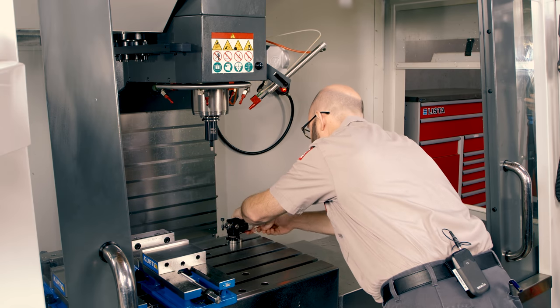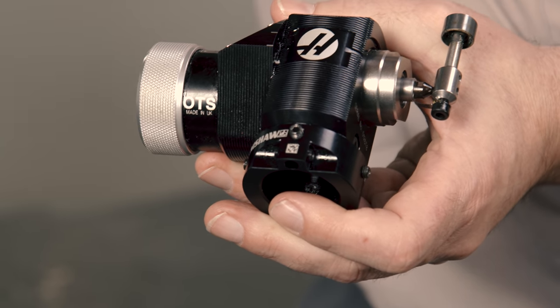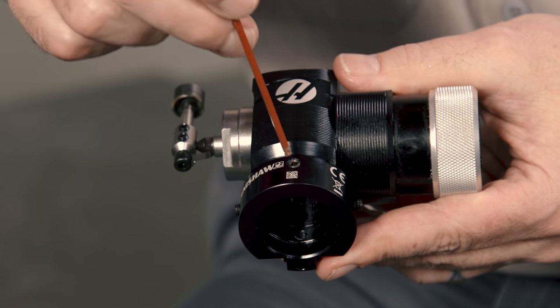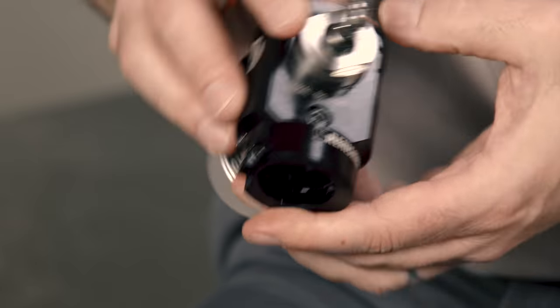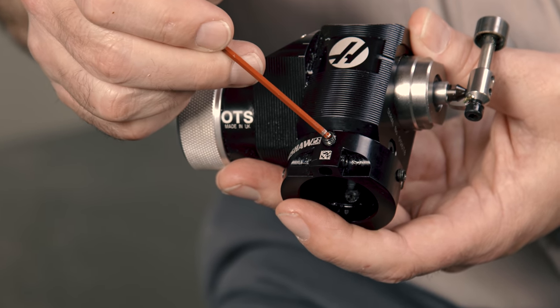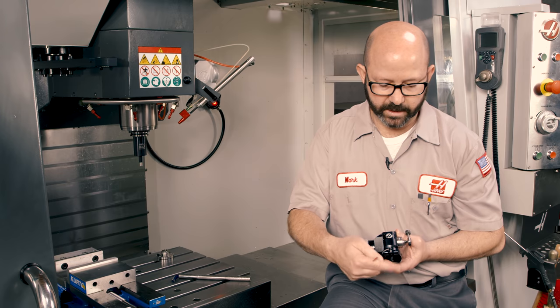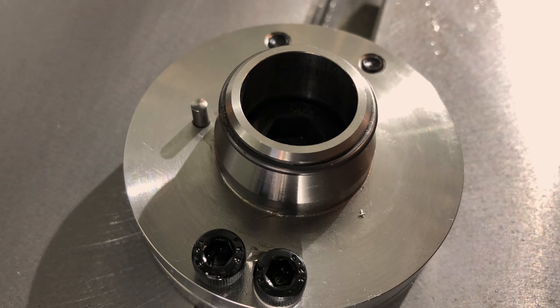To remove our table probe from the machine, we've got six set screws that have to be loosened up with our two and a half millimeter wrench. We got one, two, three, and a fourth one right here. And then we also have two set screws, one here and one here, that pinch the pin that protrudes from the base.